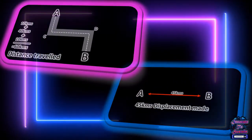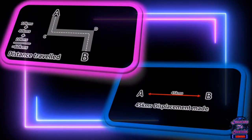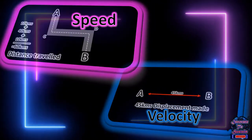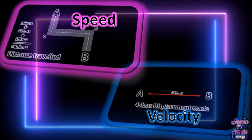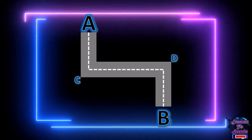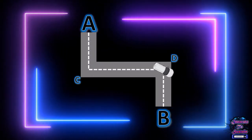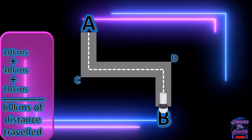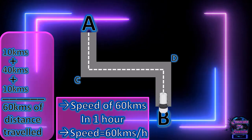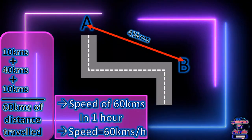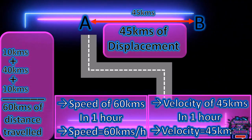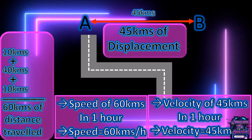Thus the car has traveled a distance of 60 kilometers to make a displacement of 45 kilometers. Let's assume the time taken by the car to reach B is 1 hour. The car traveled 60 kilometers in 1 hour, giving a speed of 60 kilometers per hour. At the same time, the car was displaced 45 kilometers in 1 hour, giving a velocity of 45 kilometers per hour.